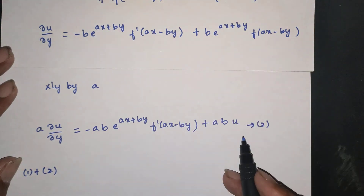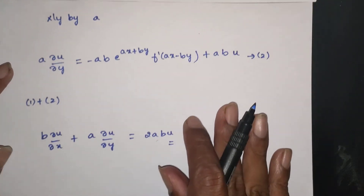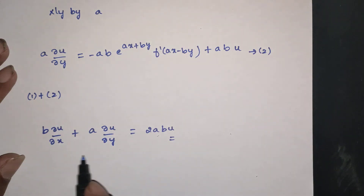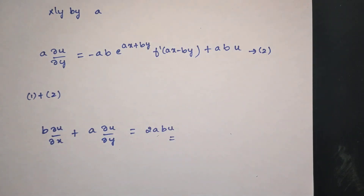Either value of u, adding parts 1 and 2, the answer is obtained: b·∂u/∂x plus a·∂u/∂y equals 2abu.